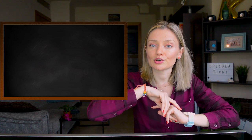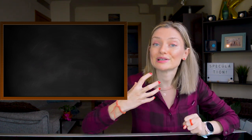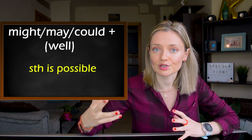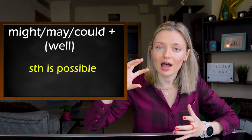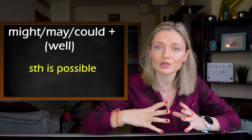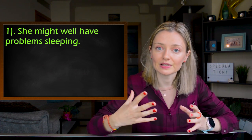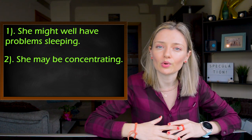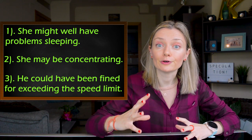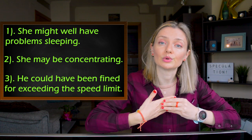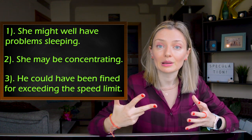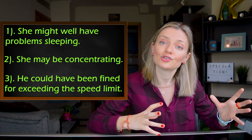The first feature you could use in order to speculate is to use modal verbs for deduction. We could use might, may, and could when something is possible, and we can add 'well' after them for additional emphasis. For example: 'She might well have problems sleeping.' 'She may be concentrating.' 'He could have been fined for exceeding the speed limit.' It's very important to use different verb tenses — present simple, present continuous, and past simple — so try to use a wide range of verb tenses.